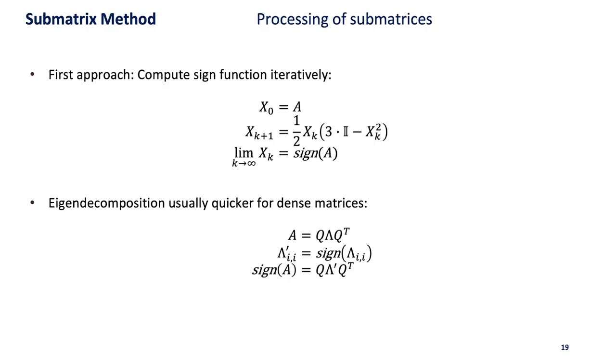What we can do is decompose A into its eigenvectors and eigenvalues, apply the sign function to all the eigenvalues of the matrix, and use these modified eigenvalues and eigenvectors to generate sign of A where A is the submatrix.